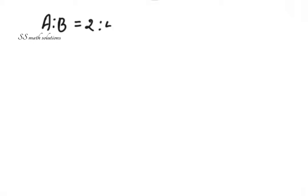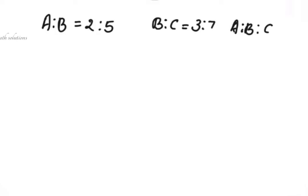Our first question is: a is to b is 2 is to 5, and b is to c is equal to 3 is to 7. We need to find a is to b is to c. So for that, I am just arranging our ratio as a, b, c like this.